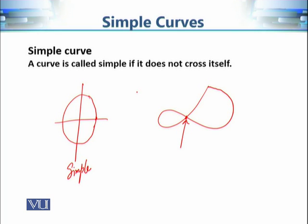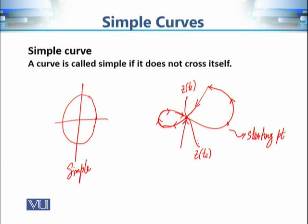To understand this more precisely: suppose we start traveling along a curve from some initial point. If we reach a point z(t1) and then, as the parameter continues to increase, we return to that same point — now also represented by parameter value t2 — then z(t1) = z(t2) with t1 ≠ t2, meaning the curve has crossed itself. We then go back to the initial point.